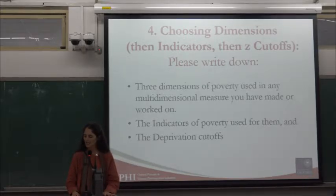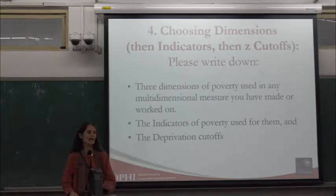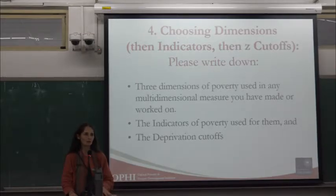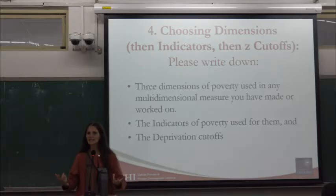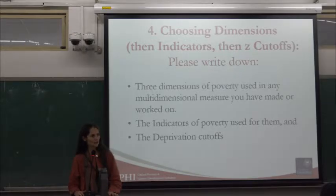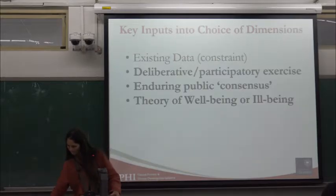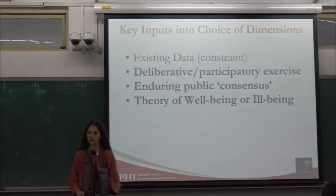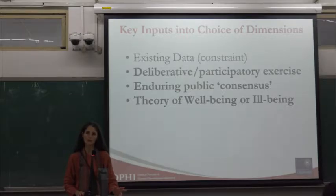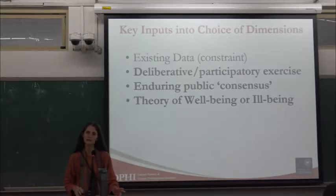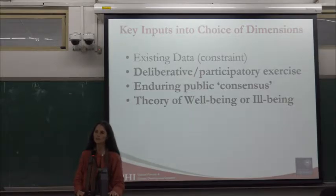Take a moment to think about dimensions, indicators, and deprivation cutoffs for your own work. How do we choose dimensions — these conceptual first steps? If you are required to use existing data, you will be limited by the variables in your dataset and may not be able to include violence or empowerment. You may also wish to consider participation: reading existing participatory studies, undertaking participatory work yourself, or drawing on a document or framework of consensus such as a national plan, the sustainable development goals, or a human rights charter.